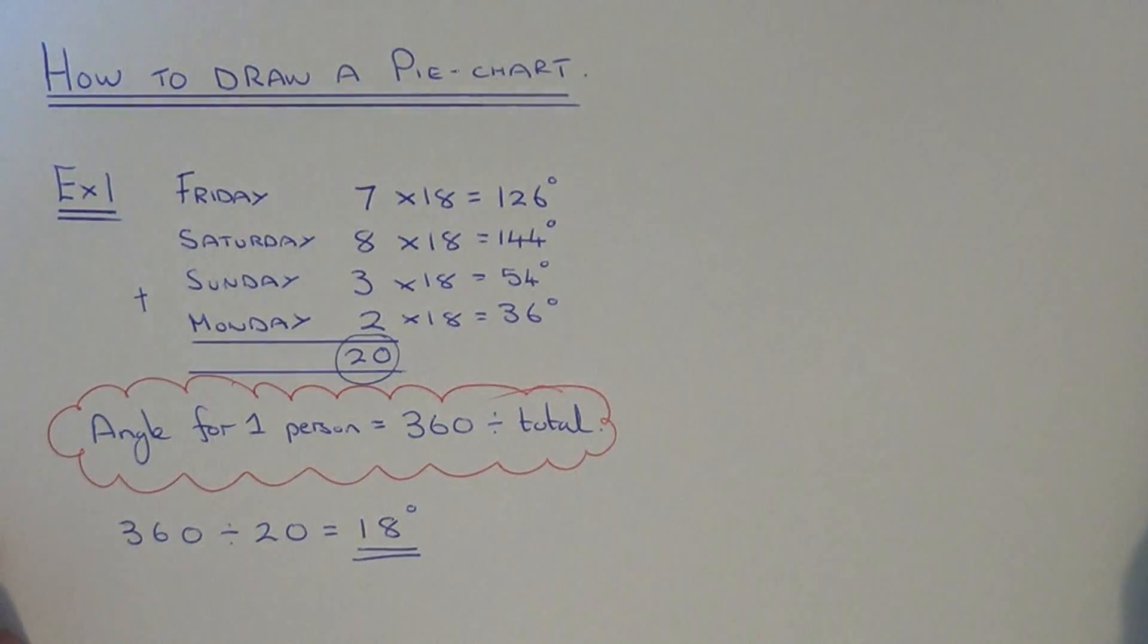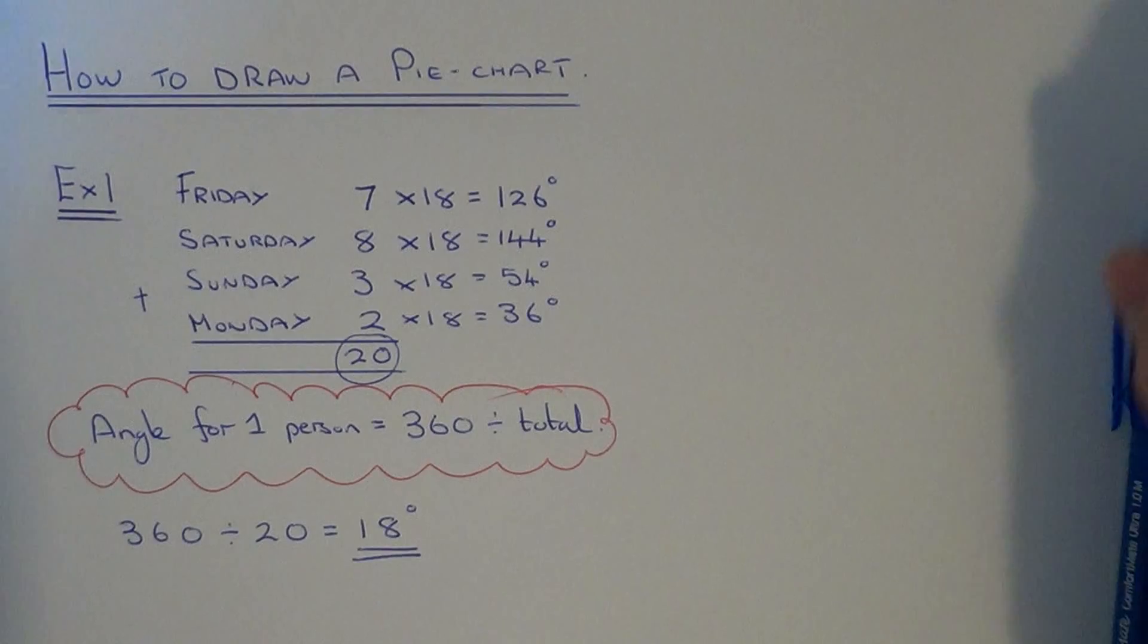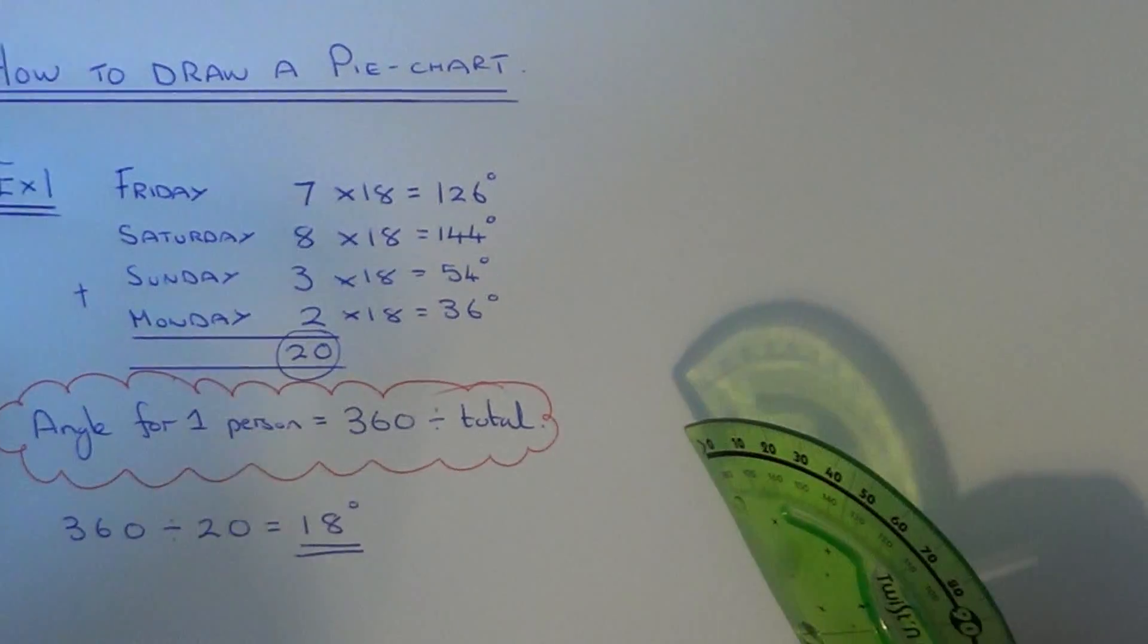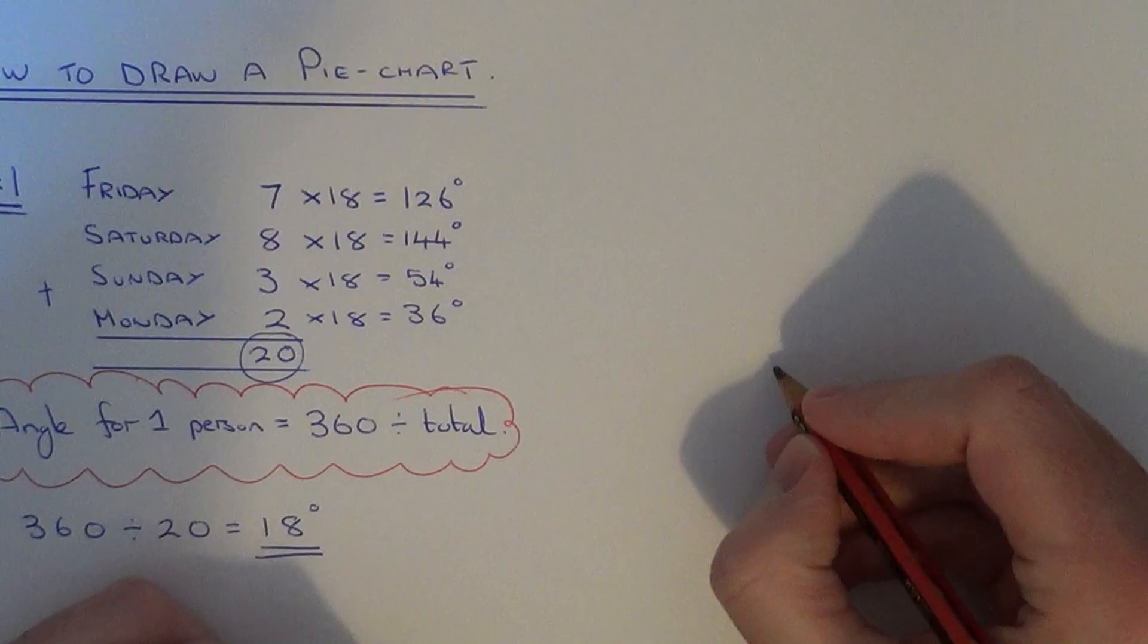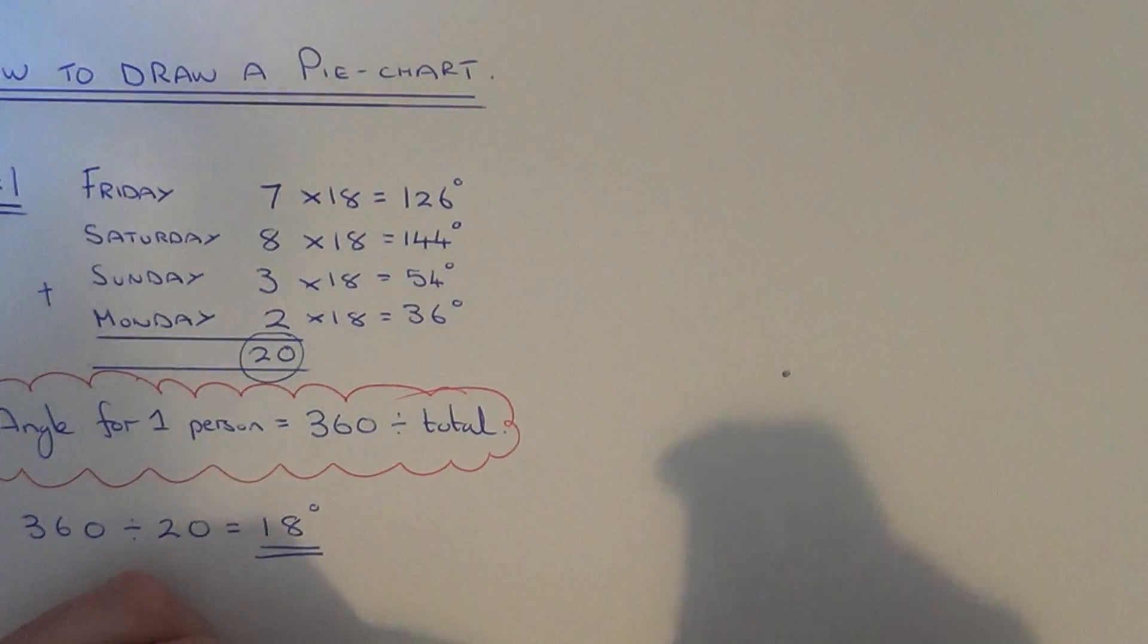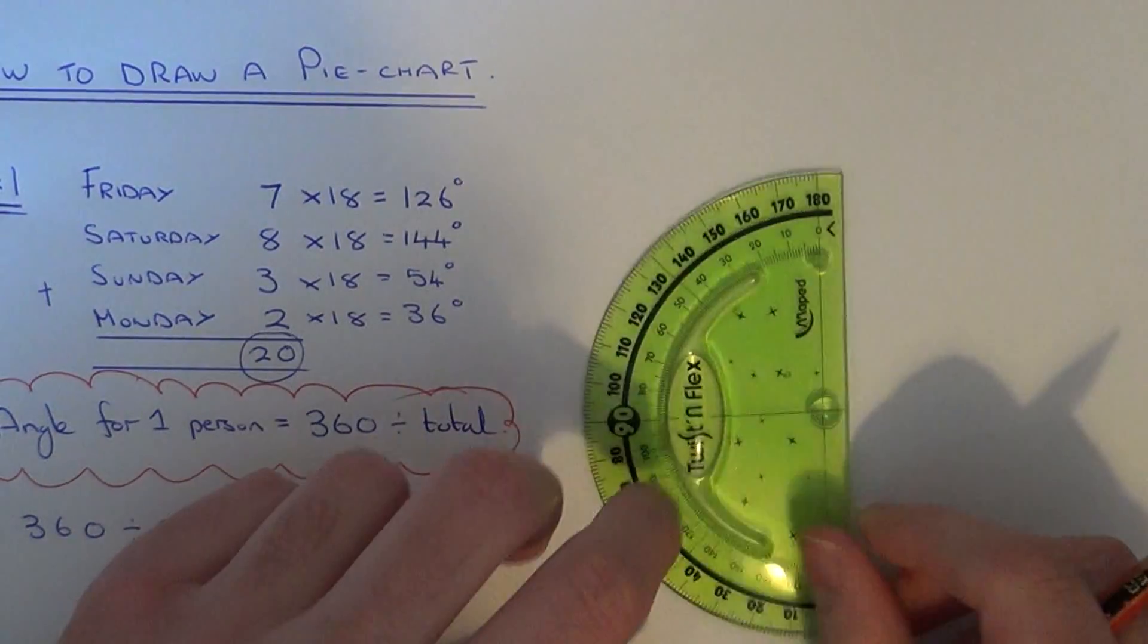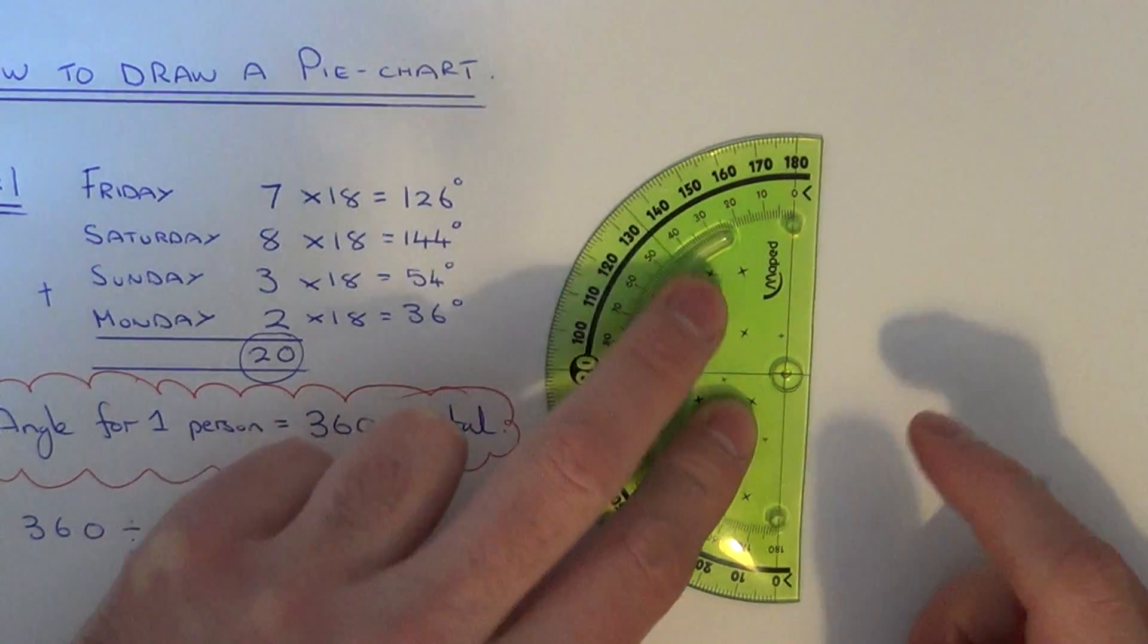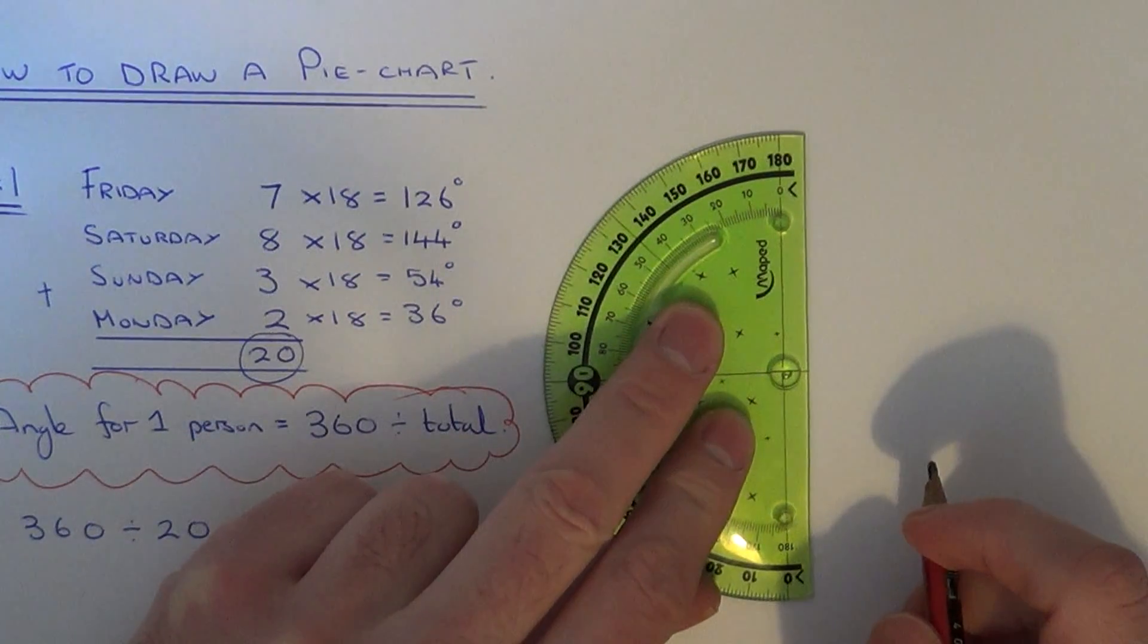So we can get on now and draw our pie chart. So if you put a dot on your page, and if you draw around the outside of your protractor, you'll get quite a good circle.